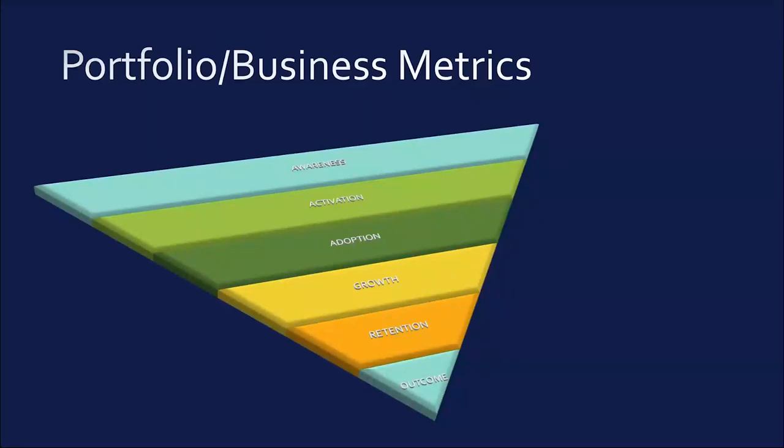Next comes the business or portfolio metrics, that is, if your product is part of product line or larger portfolio. This tracks the business outcome of product positioning. You can see those categories as awareness, activation, adoption, growth, retention, and outcome. You will also notice that few categories and few metrics are overlapping between the business or the portfolio metrics as well as the product metrics.